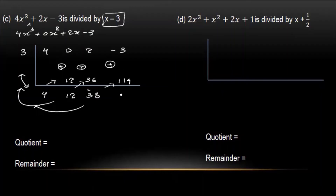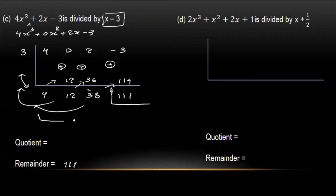1, 1, 4 minus 3 is equal to 1, 1, 1. The boundary is equal to plus, and the remainder is equal to 1, 1, 1. The coefficient of the quotient is equal to 4x squared, plus 12x plus 38.